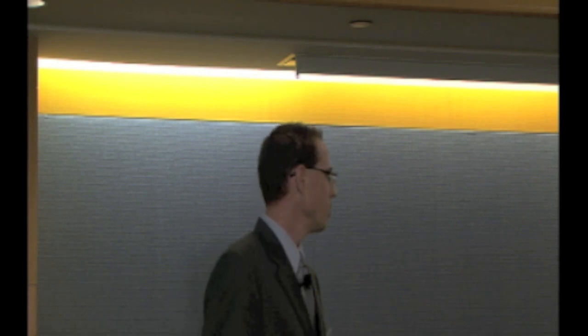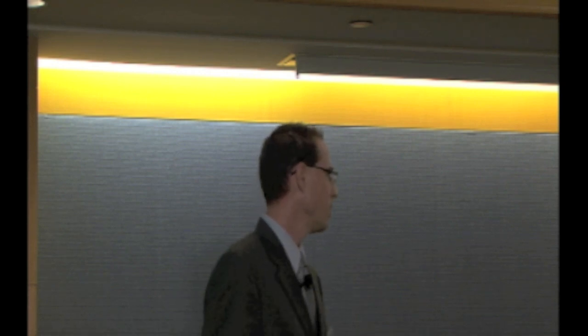Designs of stents include self-expandable and balloon-expandable types. They can be coil versus tube, slotted tube versus modular, long and short, wide and narrow, thin or thick — many simple mechanical structural variations — as well as rough and smooth types of alloys used to make the stent.